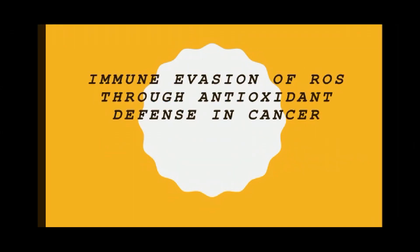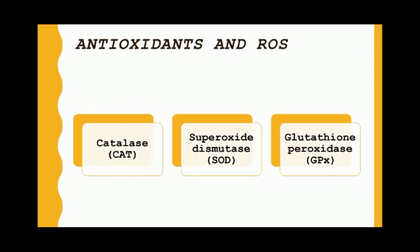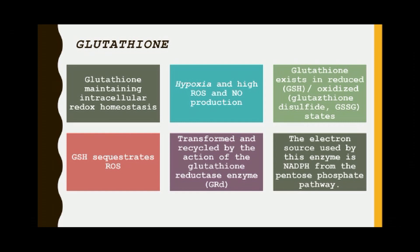Today we'll discuss immune evasion of ROS through antioxidant defense in cancer. Antioxidants are the first line of defense against free radicals and other oxidants by either neutralizing or halting the formation of free radicals. There are certain enzymes responsible for transforming free radicals into stable and less damaging molecules, which include catalase (CAT), superoxide dismutase (SOD), and glutathione peroxidase (GPX).